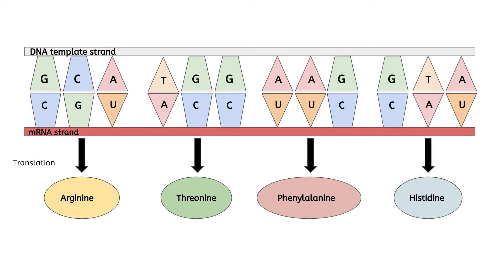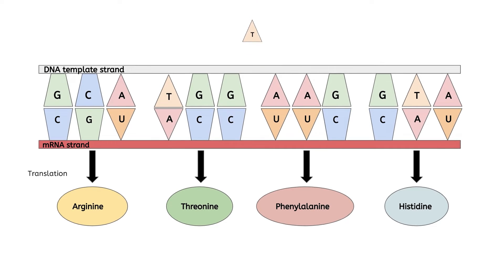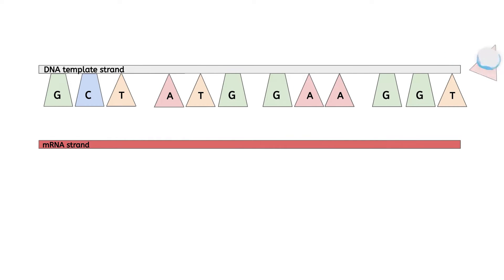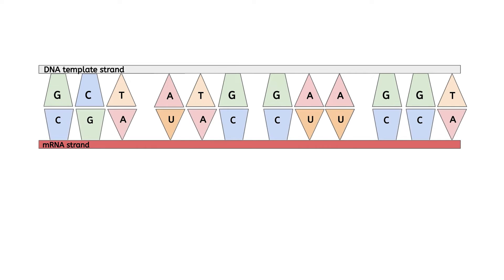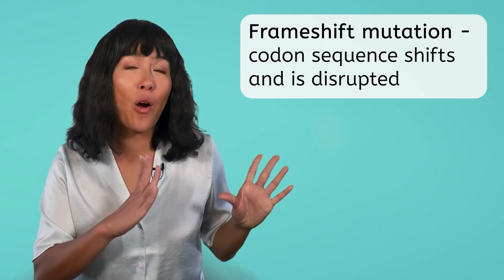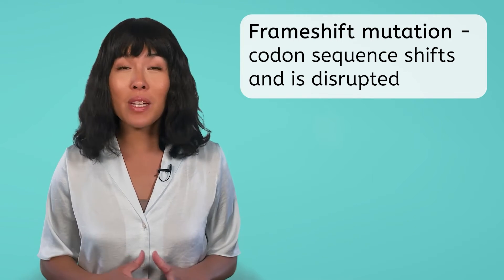This time, instead of a nucleotide getting replaced, what if a T is simply added into the chain during replication? All the other nucleotides have to shift down one spot to make room. This completely disrupts our groups of three. Our new DNA codons will be arranged differently, and so will the corresponding mRNA codons. The first codon still makes arginine, so we might think we've lucked out with a silent mutation, but the rest of the chain isn't so lucky. It continues with tyrosine, leucine, and proline — so the rest of the chain will be unrecognizable. This type of mutation is called a frameshift mutation because everything shifts down, disrupting the codon sets, and ultimately the amino acids that get made.